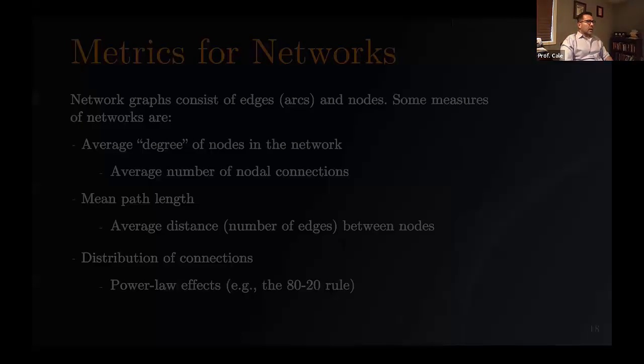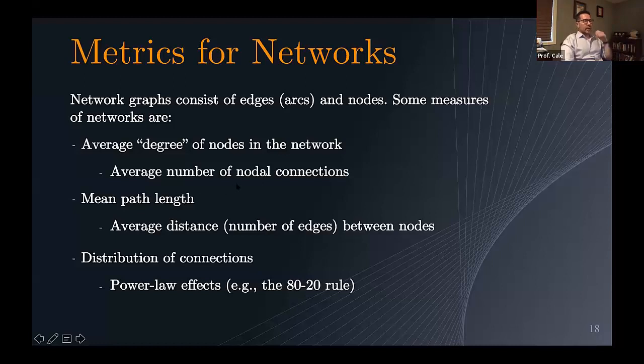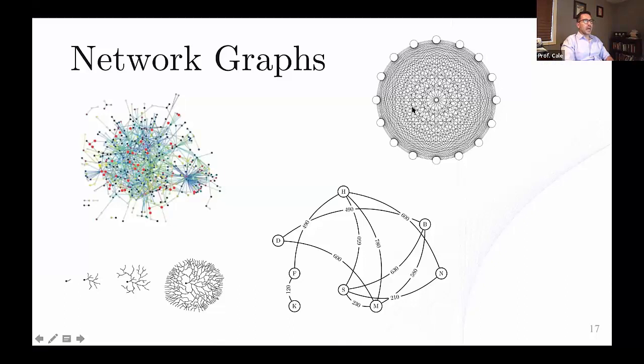And a lot of computer programs will give you this mean path link, so that's the average distance or the number of edges between nodes—how far would you have to go. In this case, this is like a hub and spoke model. A lot of systems will naturally gravitate towards this model. Like for instance, the way that airline hubs are set up, you'll have hubs in Denver or New York. That's meant to decrease the mean path link between nodes.